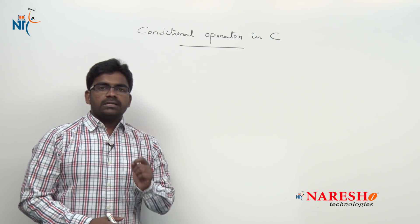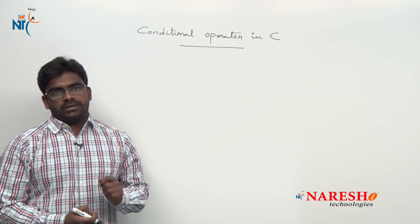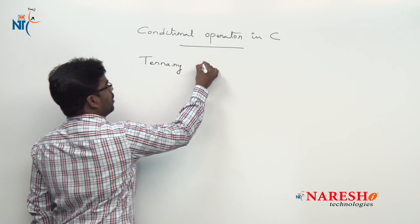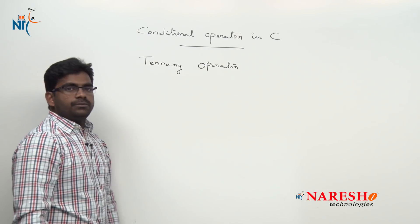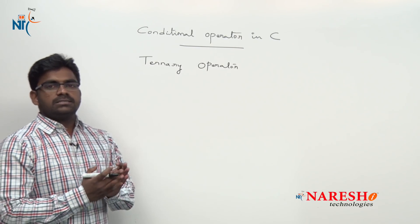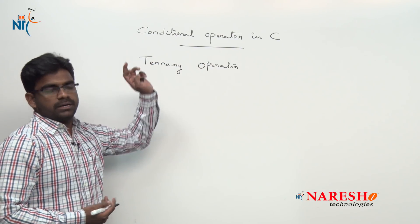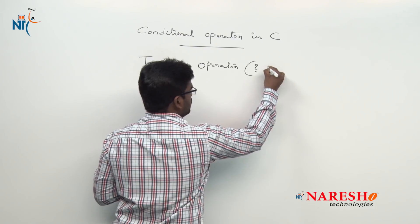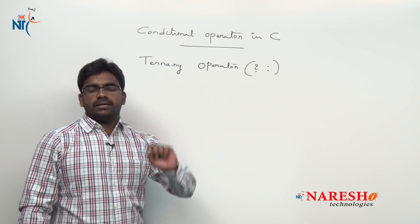First of all, what is a conditional operator? It is also called a ternary operator. Ternary operator means it performs operation on three operands. What is the symbol we are using to represent conditional operator? This is question mark and colon, question mark and colon. This is ternary operator.